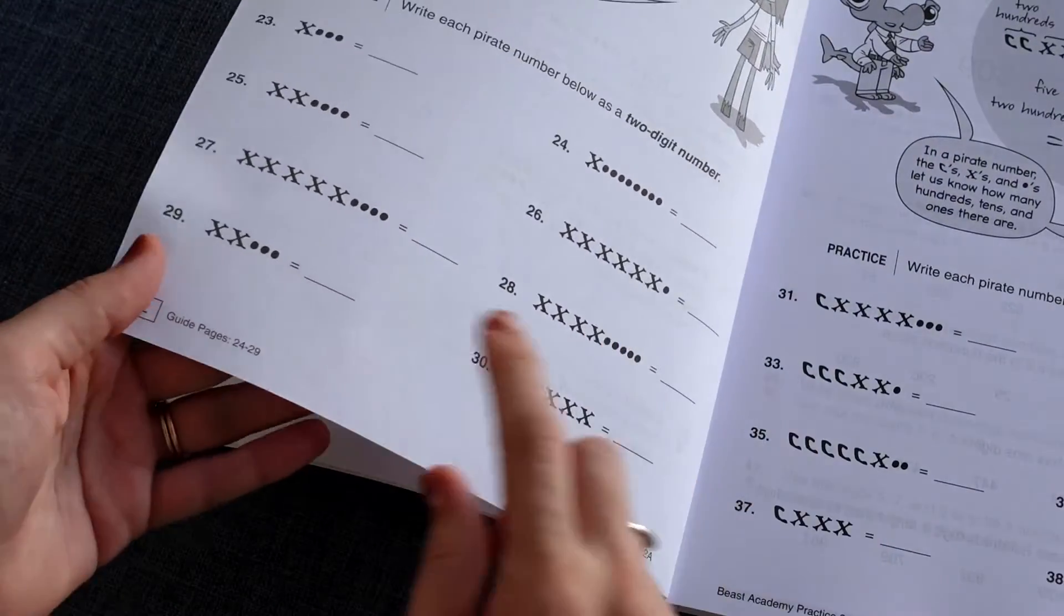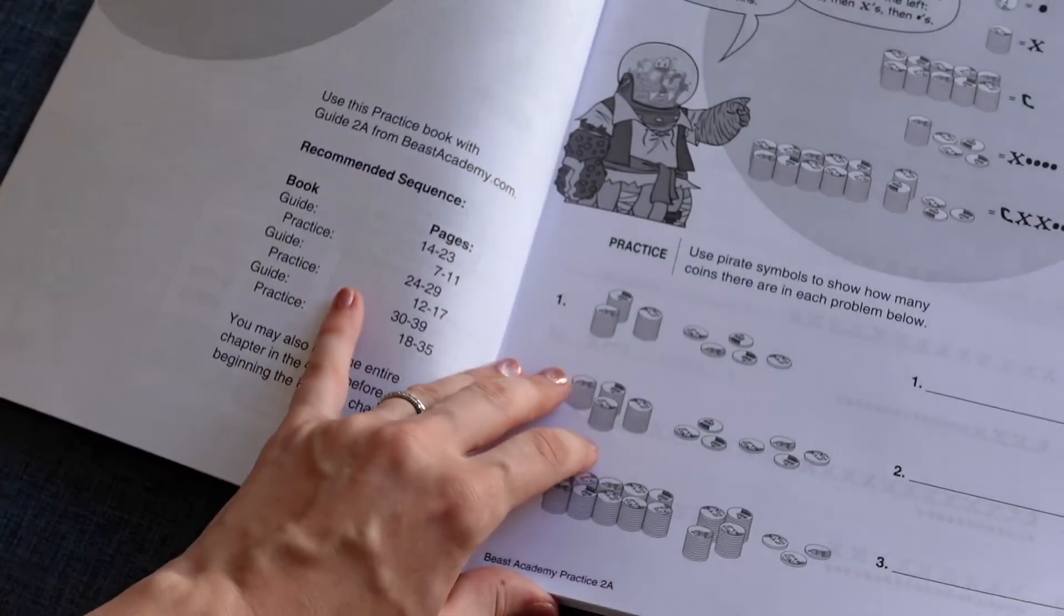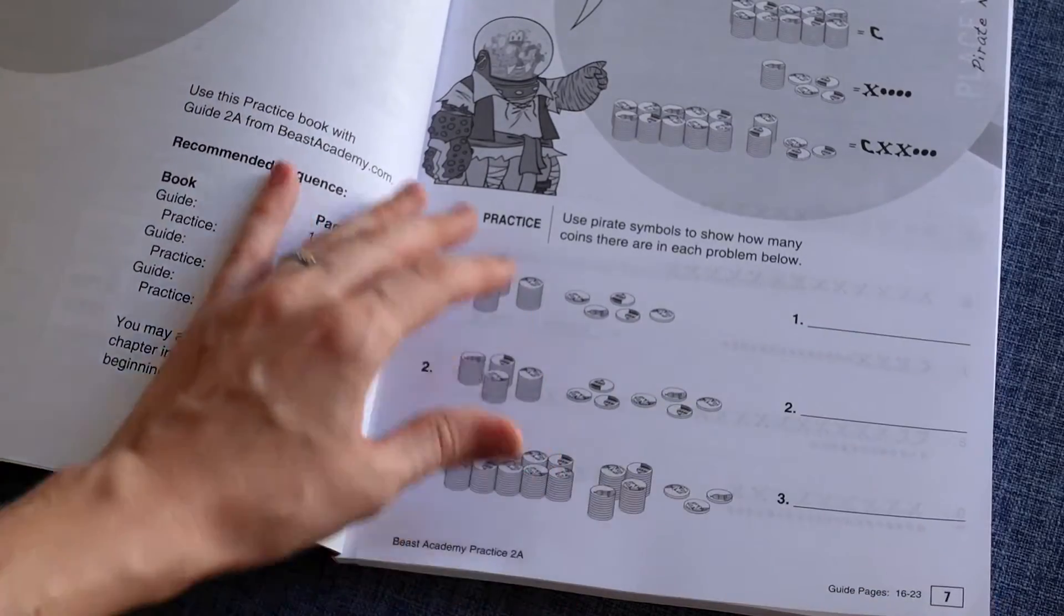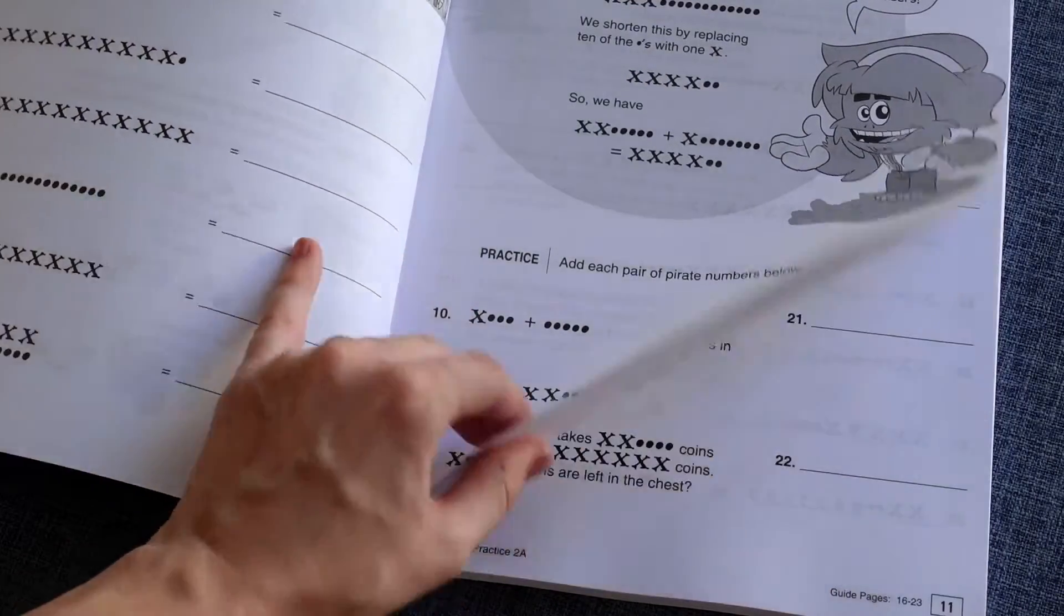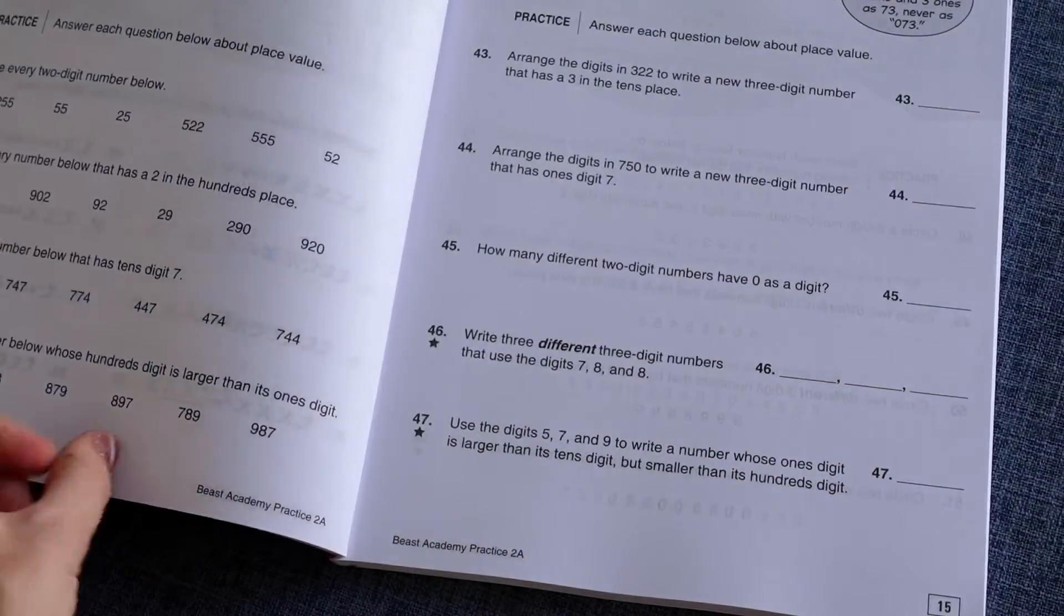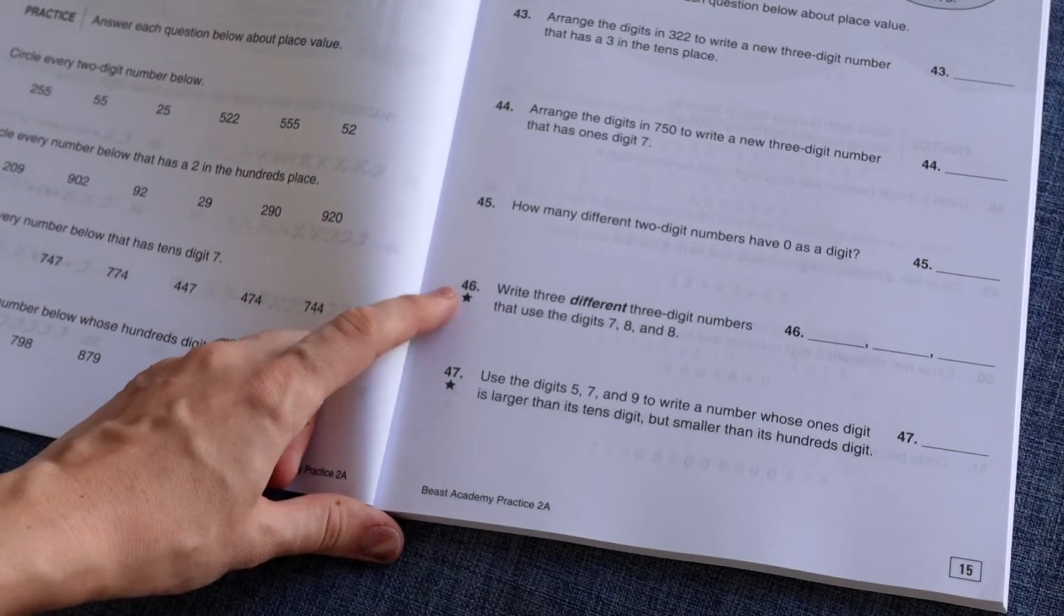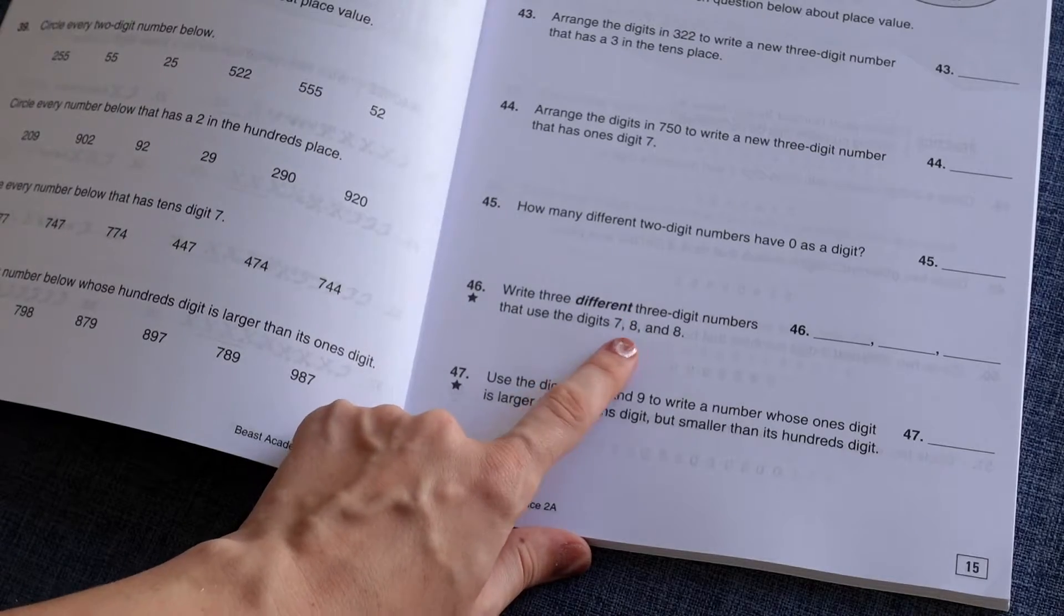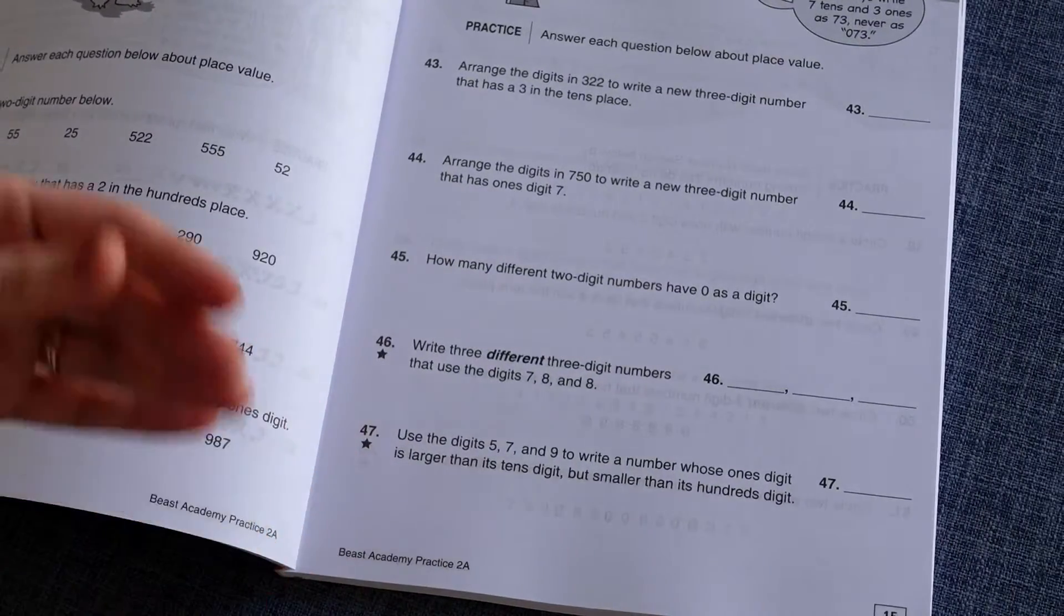And then here we begin, okay, guide pages 24 through 29. So you have a few pages to start off with. And at the beginning, you'll see that the practice problems are pretty simple. The beginning of each section is going to have a little bit more simpler of practice problems. But they do get more complicated. And as you go on, more complicated problems, problems that are going to involve more thinking to solve the problem, are going to have a star. So write three different three-digit numbers that use the digits 7, 8, and 8. So that's going to require a little bit more thought for your child.